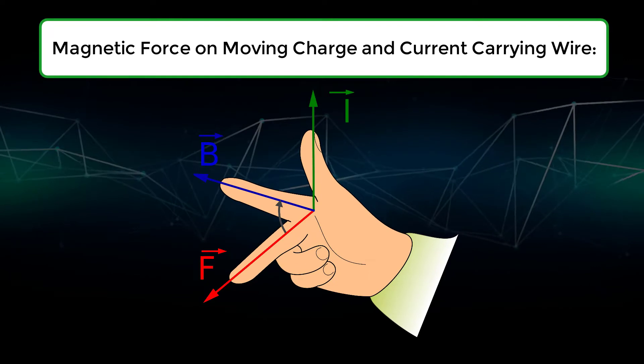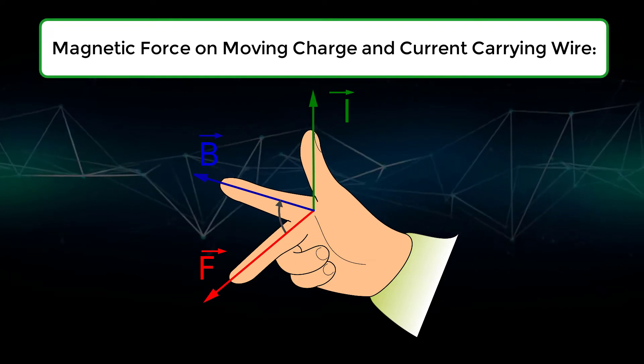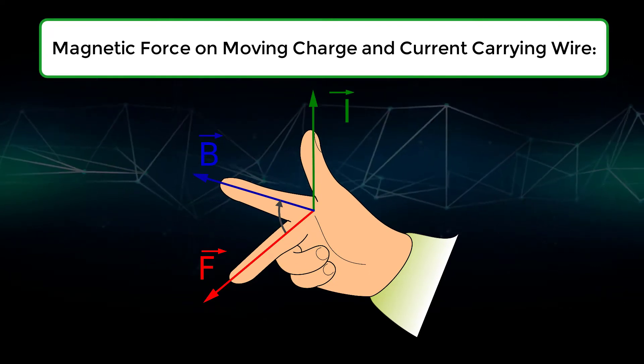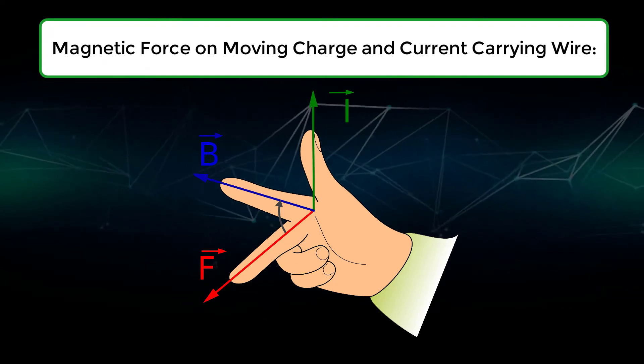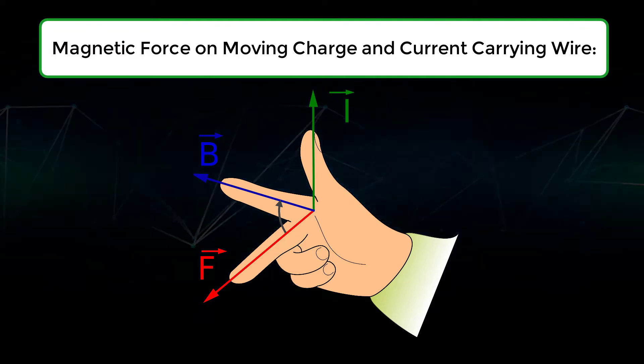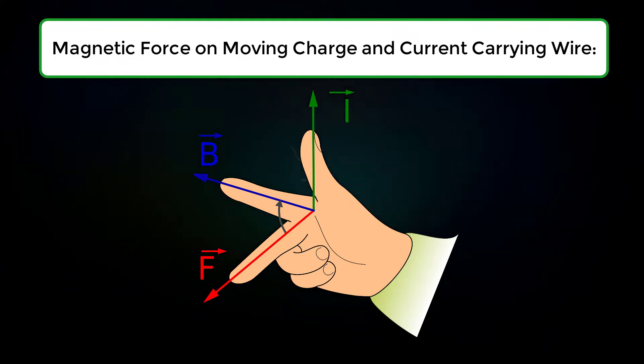We find the direction of the force by the right hand rule. The picture given here shows the direction of the magnetic field, current, and force.